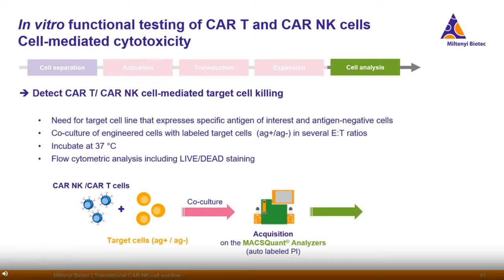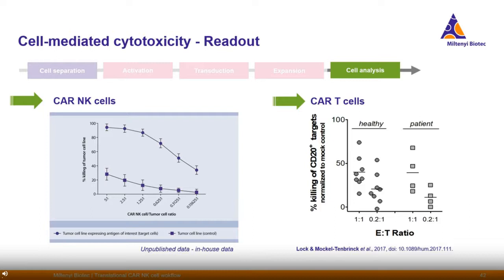Let's have a closer look at CAR T or CAR NK mediated cytotoxicity, assessed by a killing assay. You will need a target cell line that expresses the specific antigen of interest and antigen-negative cells. Engineered cells and mock-transduced cells were suspended in medium and seeded in different doses into a 96-well plate. Afterwards, the target cells — antigen-expressing or antigen-negative — were added, incubated at 37°C, then acquired by the MACSQuant Analyzer and analyzed using special Express Modes. We observed antigen-specific killing of the tumor cell line for CAR NK cells. CD20-directed CAR T cells are able to kill CD20-positive target cells — at an effector-to-target ratio of 1:1, about 40% of the CAR target cells were killed.